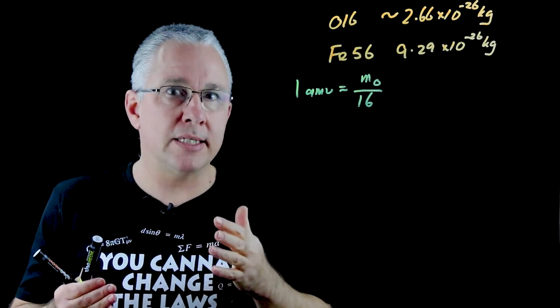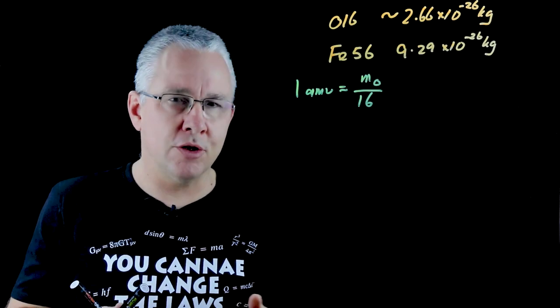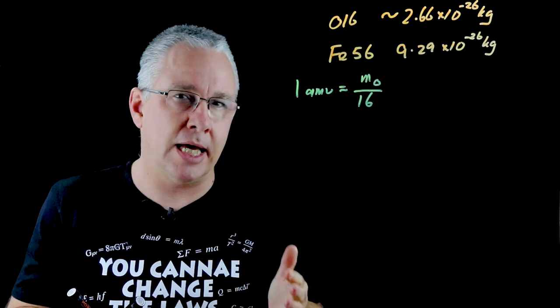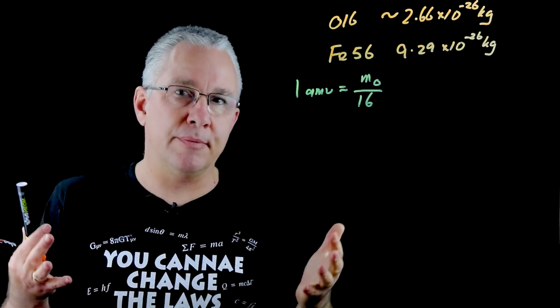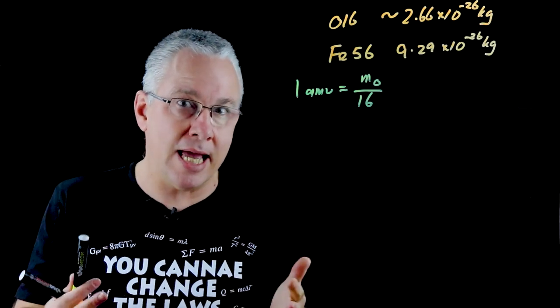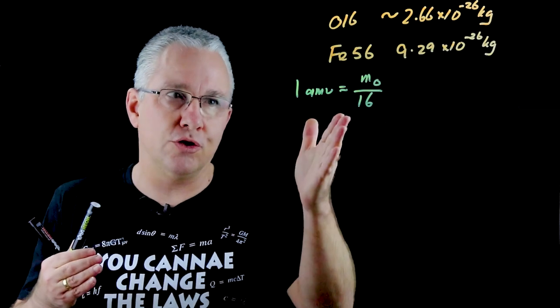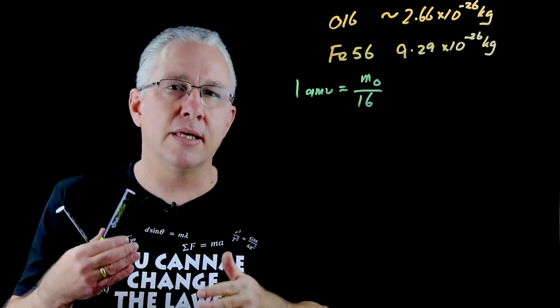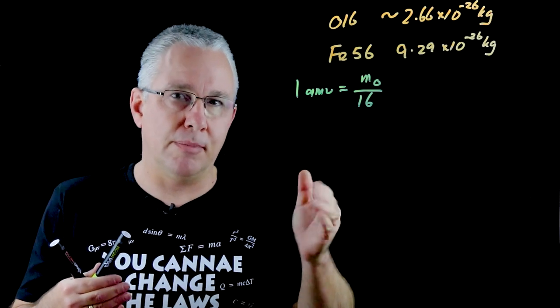But the problem became when they discovered other isotopes of oxygen. We don't have just oxygen 16, we have oxygen 17 and oxygen 18 and they're in our environment as well. So if you are wanting a standard then you need to only have oxygen 16. But since there are different isotopes in various chemical compounds, then this standard becomes problematic.